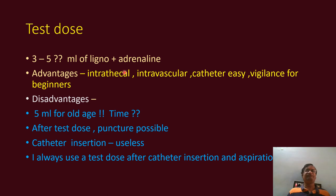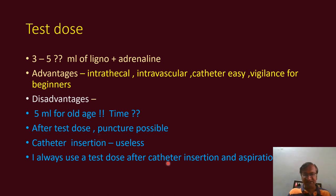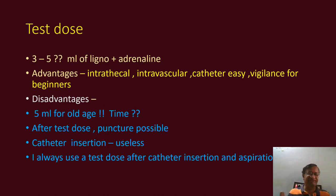The test dose is 3 to 5 ml of lignocaine with adrenaline, preferably 3 ml. This screens for intrathecal and intravascular placement. Catheter ECG and vigilance for beginners are important. Sometimes 4 ml may be dangerous in elderly patients, especially in thoracic epidurals. Even after the test dose, dural puncture is possible. After catheter insertion — if everything is fine — you can also aspirate before each dose and then administer. When topping up for the third time, use again 3 ml as a test, wait for some time, aspirate, and then top up with another 10 ml.